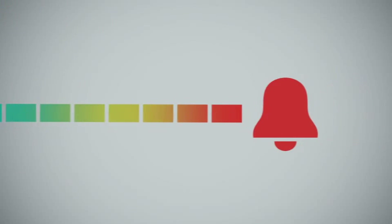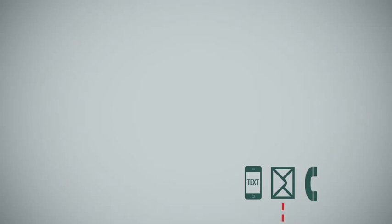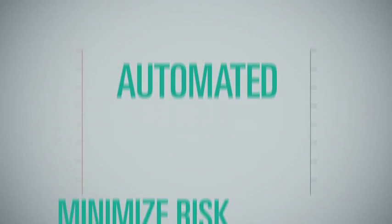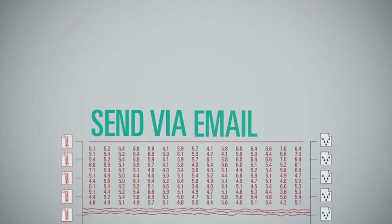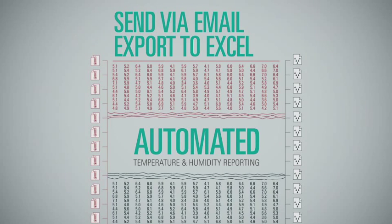Out-of-range alerts are sent via email, text, or phone call as soon as the problem is detected, minimizing the risk of products having their safety or efficacy compromised. Temperature and humidity reporting is automated, and reports can be sent via email or exported to Excel, allowing for comprehensive access to historical data.